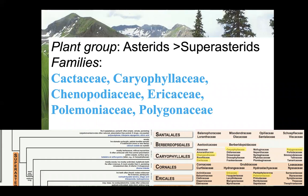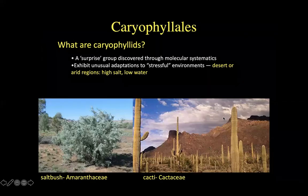This basal group, the super asterids, primarily focuses on two big orders: the Caryophyllales and the Ericales. There are also mistletoes in this group, things in the Cornales — dogwood and stickleleaves — as well as hydrangeas. There's tons of diversity within the Ericales. So the two big ones we'll cover today are the Caryophyllales first, then the Ericales.